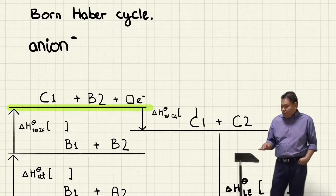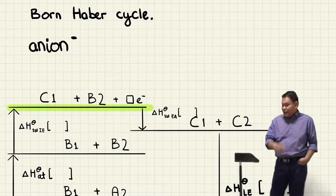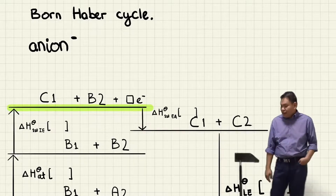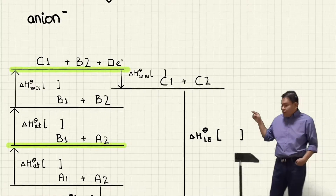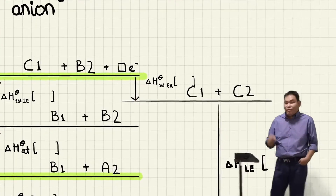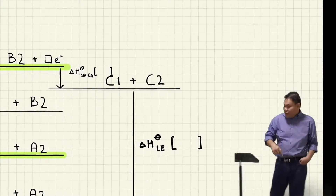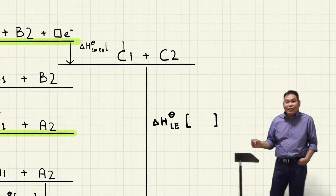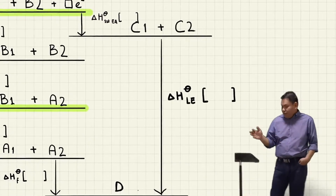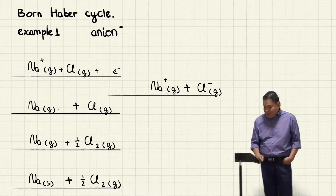From B1 plus B2 to C1 plus B2 you ionize B1, so you add the first IE of B1, and possibly the second IE and so on. Then from C1 plus B2 to C1 plus C2 you do the first EA of B2 pointing down. From C1 plus C2 you draw a long arrow downwards to D, which is the ionic compound in solid state. From A1 plus A2 to D is the delta H formation.